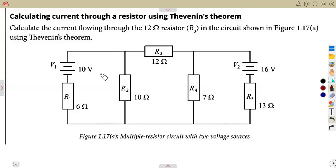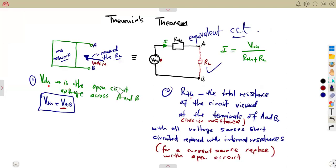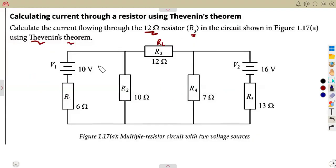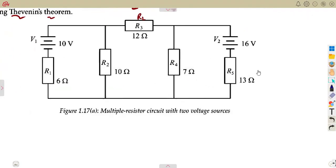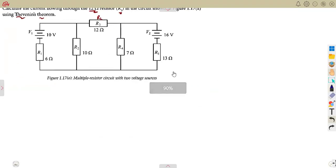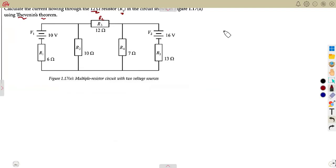In this example we want to consider another application of Thevenin's theorem where we need to calculate the current flowing through the 12-ohm resistor R3. According to our circuit, R3 is our load resistor. Our stages are not going to change. The first stage is to remove the load resistor.